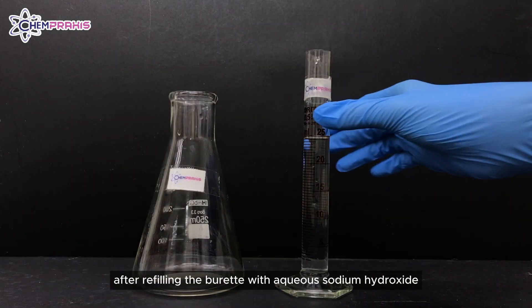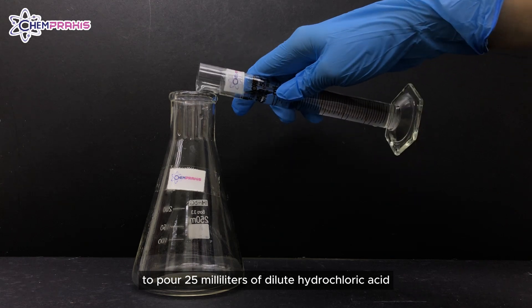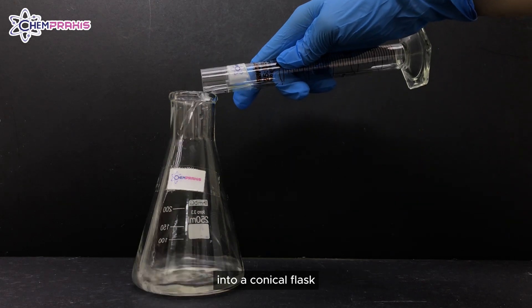After refilling the burette with aqueous sodium hydroxide, use the measuring cylinder to pour 25 mL of dilute hydrochloric acid into a conical flask.